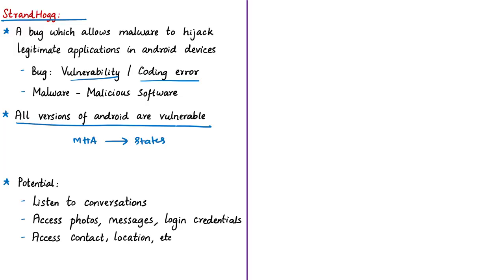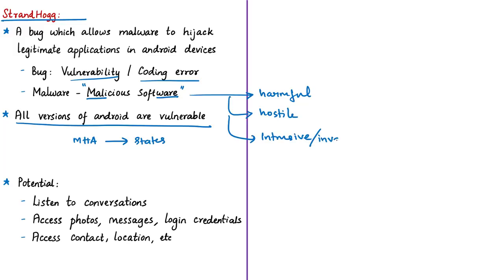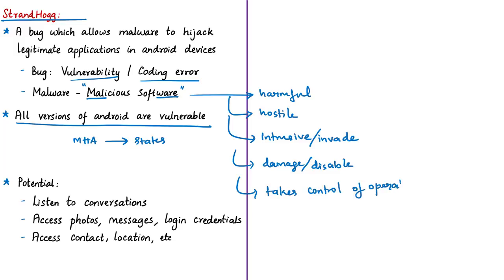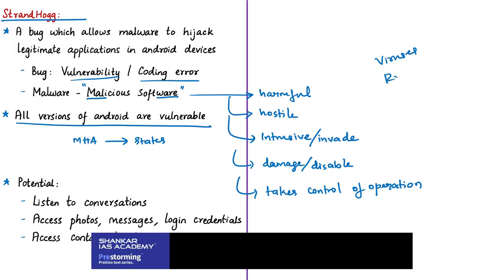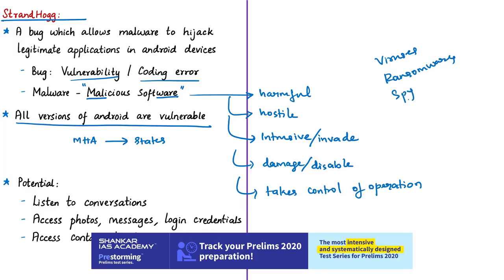The StrandHog bug allows real-time malware applications to pose as genuine applications and access user data of all kinds — audio recordings, photographs, and contact details. Malware is malicious software, an umbrella term describing any malicious program or code harmful to computer systems, mobile devices, or electronic devices. Its characteristics include being hostile and intrusive — seeking to invade computer systems and networks to access personal information, damage or disable systems, and frequently take partial or entire control of a device. Variants include viruses, ransomware, and spyware. Pegasus, a spyware discussed earlier, exploited a vulnerability in WhatsApp's video call feature.